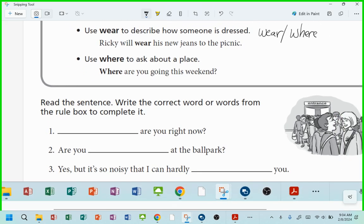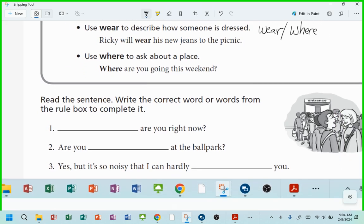So it says, read the sentence, write the correct words from the rule box. Blank, are you right now? What spelling do I need to put there? Lily? Yeah. Which one? W-H-E-R-E. All right. Do you guys know what you're doing for six? All right. There you have it. Homophones.